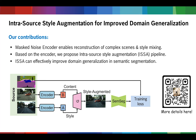The ESA pipeline aims to improve the diversity of the training data. Last but not least, we demonstrate that ESA can improve generalization under natural distribution shifts in semantic segmentation. Please check out our paper for more detailed experimental results. Thank you.